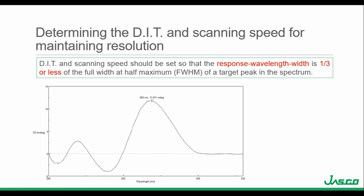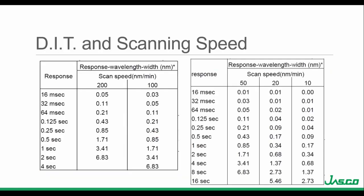The DIT and scanning speed should be set so that the response wavelength width is one-third or less of the full width at half max of the target peak. In this spectrum, the target peak is at 269 nanometers and the full width half max is 28.1 nanometers — a third of that is 9.4. So the wavelength response width must be less than 9.4 nanometers. The tables shown provide a list of response wavelength widths calculated from various DIT and scanning speed pairs, with optimal pairs highlighted in green.